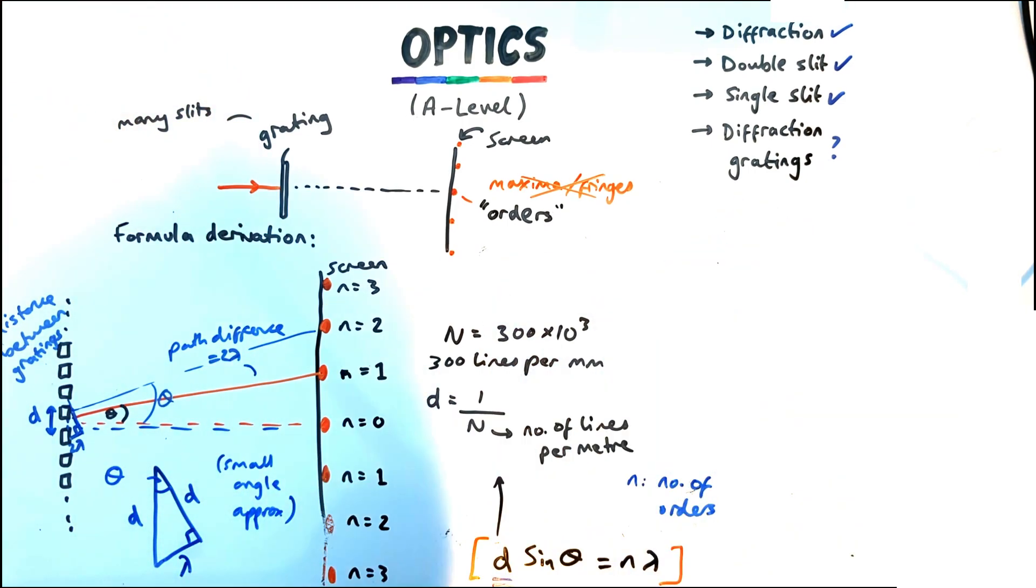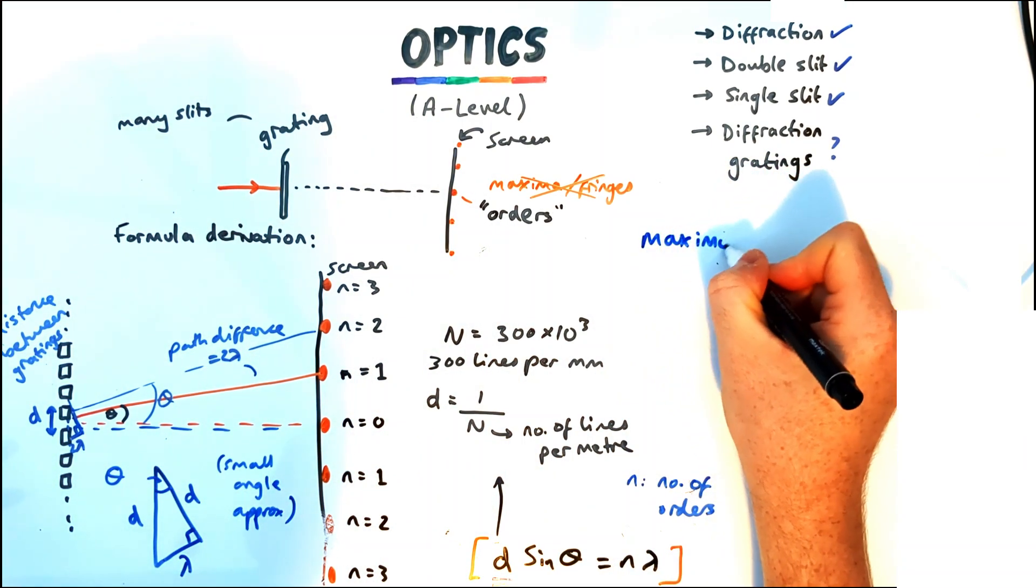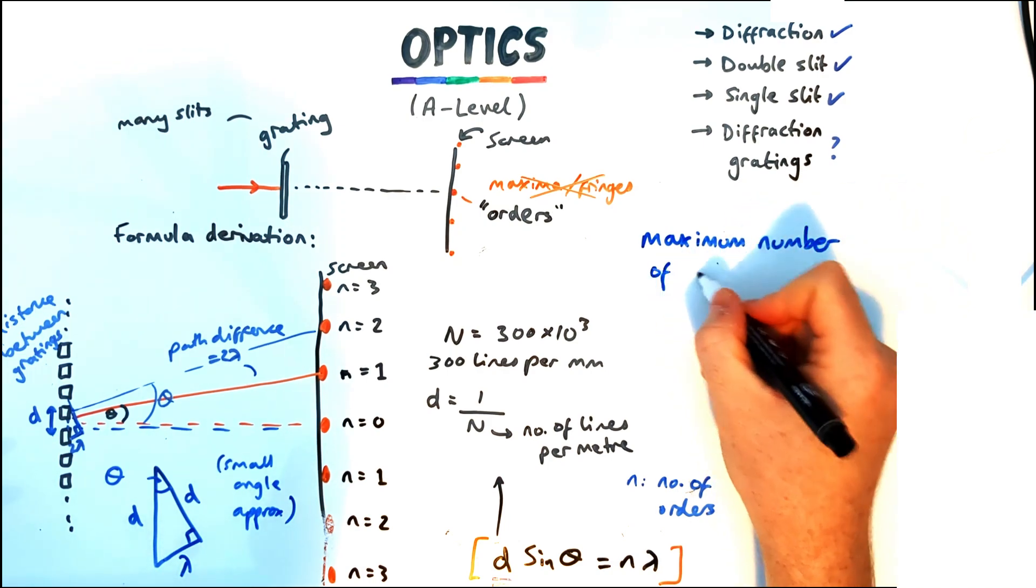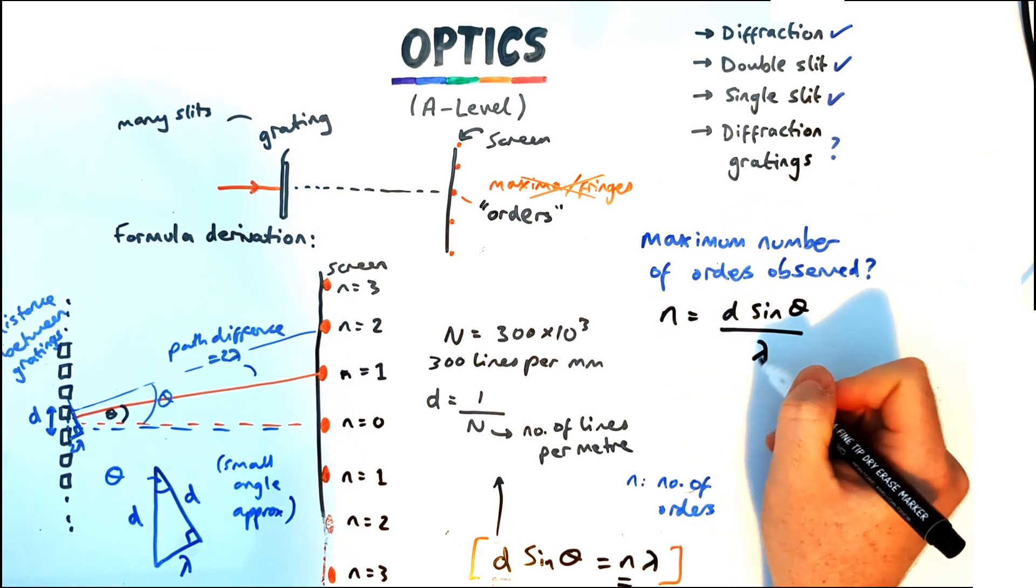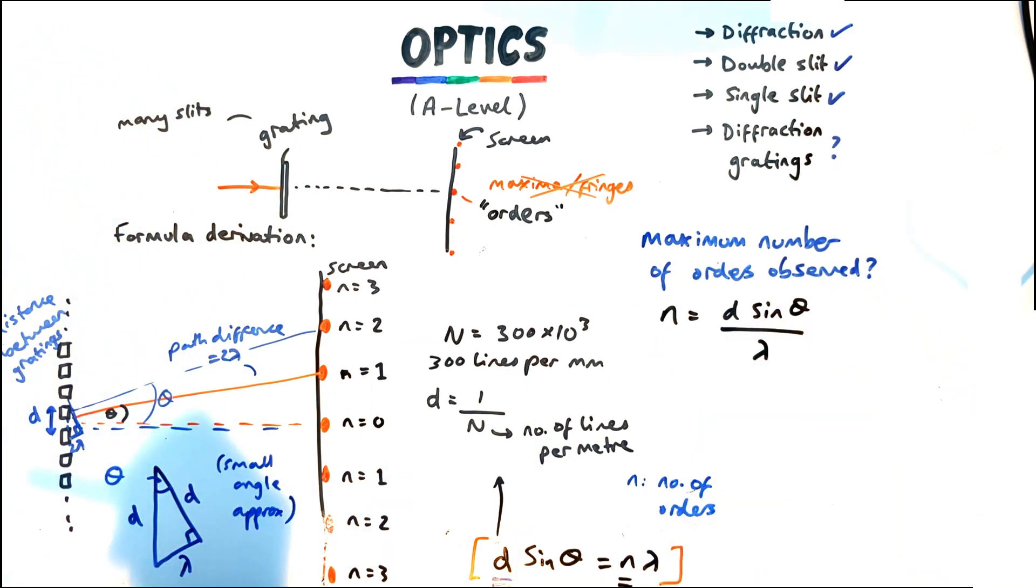Sometimes questions ask you how do you work out what is the maximum number of orders that are observed. So how you do this you rearrange the equation for number of orders and then realize well actually the maximum this angle can be for diffraction is 90. If it was any bigger it would be reflection.